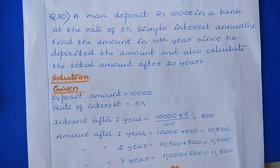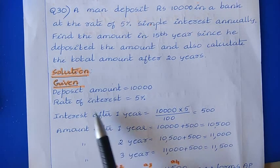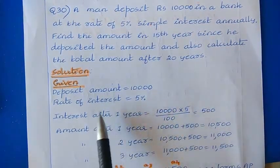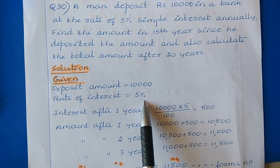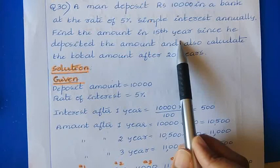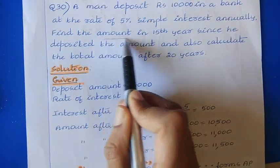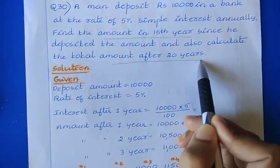Question No. 30. A man deposits Rs. 10,000 in a bank at the rate of 5% simple interest annually. Find the amount in the 15th year since they deposited the amount, and calculate the total amount after 20 years. The given values are: deposited amount = 10,000 and rate of interest = 5%. We need to find the amount in the 15th year and the amount after 20 years.